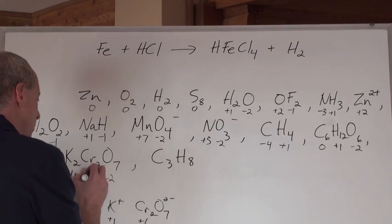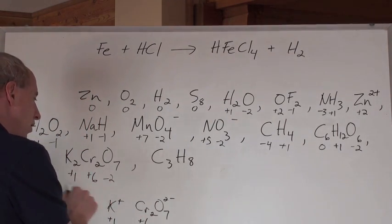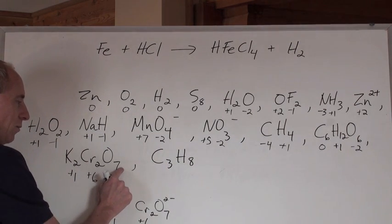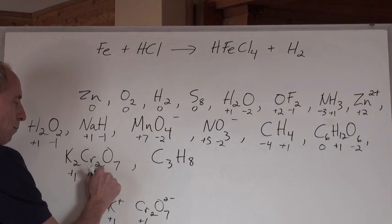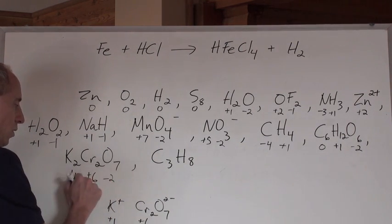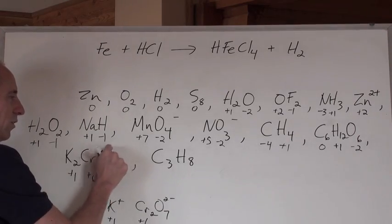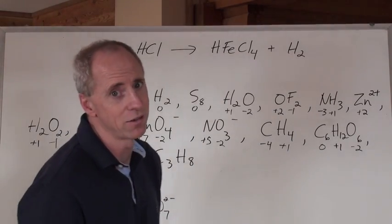That means individually they must be plus six. Six times two is twelve, right? Plus six. Now if you add all that up, negative two times seven is negative fourteen, plus twelve is negative two, plus two is a total of zero. Oh, that's great stuff.